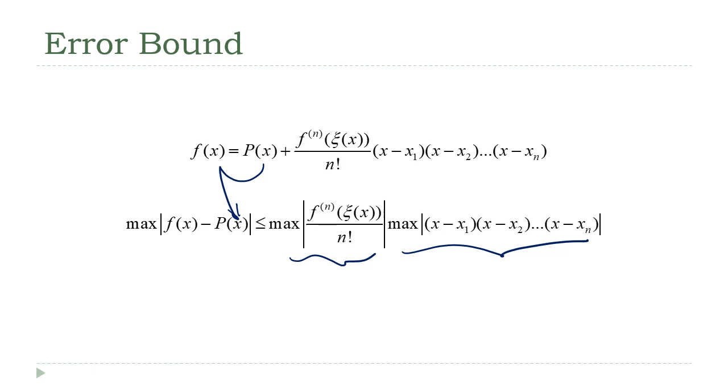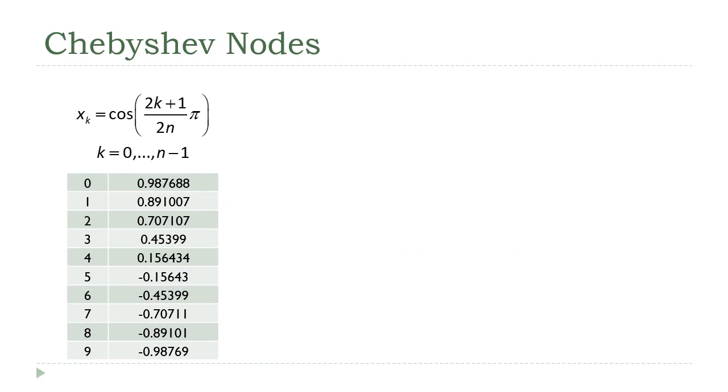There are these things called Chebyshev nodes. Chebyshev, if you're taking a statistics class, yes, it's that Chebyshev. What he did is he came up with this formula for coming up with these nodes based on this cosine function.